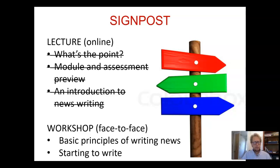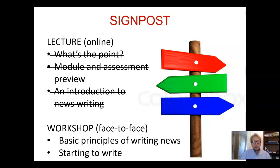That's pretty much it for today. We've talked about the whole point of journalism, done risk assessment, ethical approval, the assessments, and the way the module is structured. Then we've briefly talked about the basics of news writing — writing in a style that's clear, concise, and correct — and about conducting yourself as a neutral, invisible narrator. We'll be seeing each other at the face-to-face workshop in week one, where we'll be expanding on these principles and actually starting to write news.